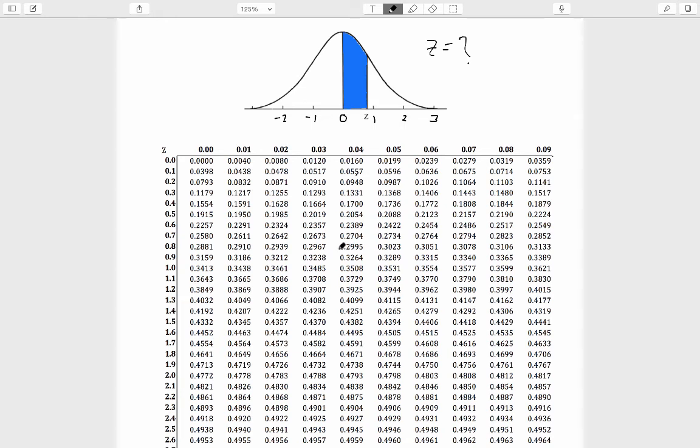The closest entries we find to 0.3 are these two, which live in the 0.8 row and between the 0.04 and 0.05 columns. That means that the exact value of z that would give rise to exactly 0.3 as the value in the table is 0.84 something, a little bit more than 0.84. But we're not going to worry about that. Since 0.2995 is a little bit closer to 0.3 than 0.3023 is to 0.3, we're going to stick with the 0.2995.